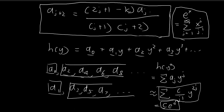As j gets larger and larger as the infinite series goes on, this approximate formula becomes more and more valid, and h(y) is going to behave more and more like c times e to the power of y squared. This function is not normalizable — as y tends towards large numbers, this value goes to infinity, making it impossible to normalize. So h(y) will not be normalizable, and this is a problem because our solutions have to be normalizable.